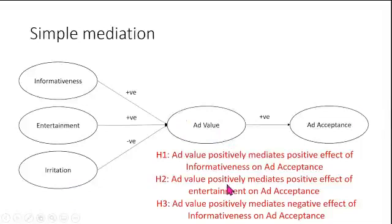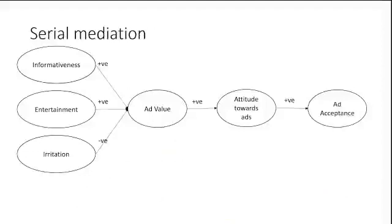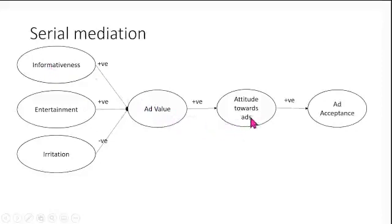This is how we would talk about simple mediation. Now, if we have a serial mediation, this is how it would be presented. We have three IVs, but we have two mediators in between. It's like: informativeness → ad value → attitude towards the ads → ad acceptance.